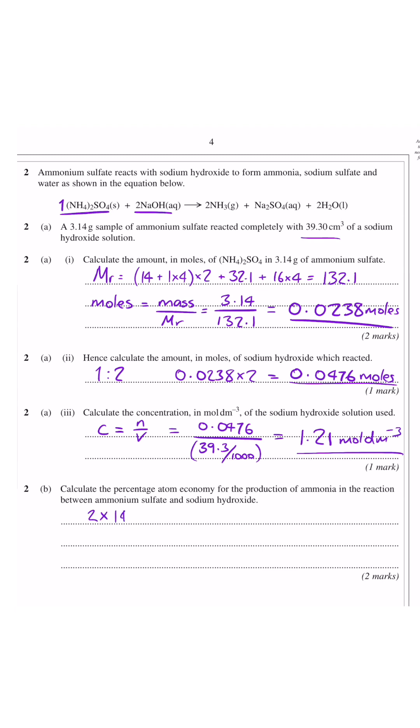To work out the atom economy you start with the MR of ammonia times that by 2 because there's 2 of them in the product side of the equation. Then divide that by the total of the MR of all the products and times that all by 100, which gives you 34 over 212.1 times by 100 to give 16.03%.